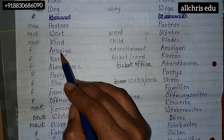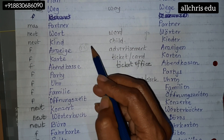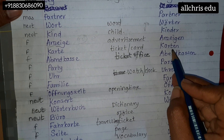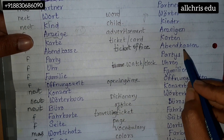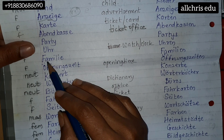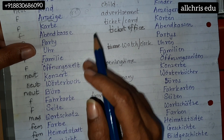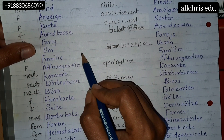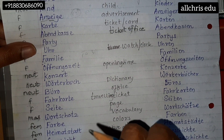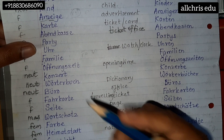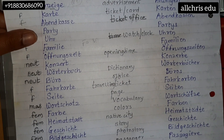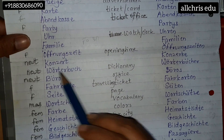Anzeige — 'ai' like how we say 'rai' in Aishwarya Rai. Anzeige, Anzeigen. Karte, Karten. Abonnement, Abonnements. Party, Parties. Fahrt, Fahrten — be careful, F-A here is 'fa', not 'faa'. Don't say 'family' with an 'a' sound; make an 'ä' sound instead. Familie, Familien.